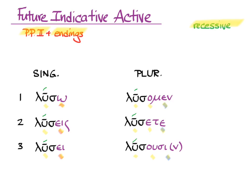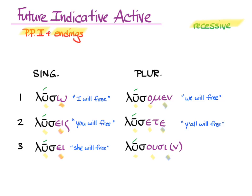That's the whole conjugation of the future indicative active of luo: luso, I will free; lusace, you will free; lusei, she will free; lusomen, we will free; lusate, y'all will free; and lususi, they will free.